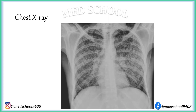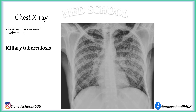Sometimes consolidations are so small in size that their size can be compared with the size of a millet. Such bilateral micronodular involvement is usually seen in miliary tuberculosis, and this pattern is usually seen in patients who are immunocompromised.